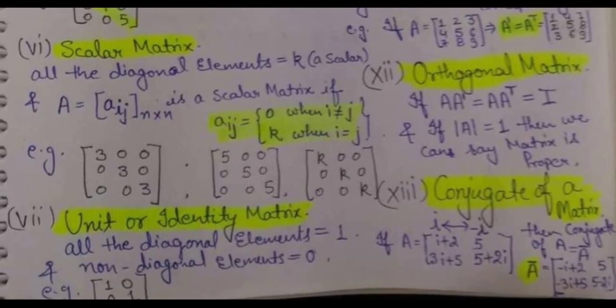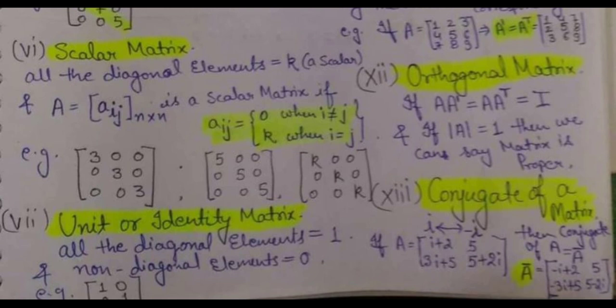Next, the conjugate of a matrix. If any matrix A is given to us — for example, with elements i plus 2 and 5 in the first row, and 3i plus 5 and 5 plus 2i in the second row — you interchange iota with minus iota everywhere. If iota is given, change it to minus iota; if minus iota is given, change it to iota. The new matrix you get after this replacement is known as the conjugate of the matrix.